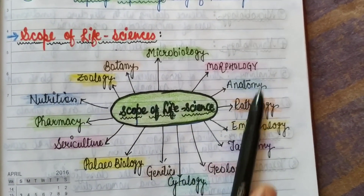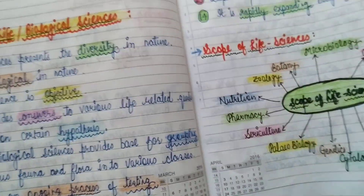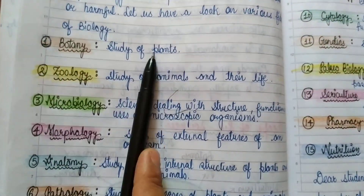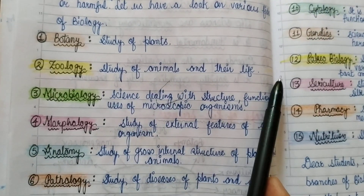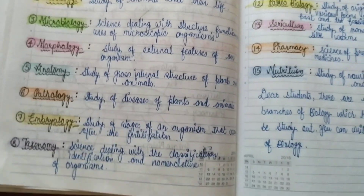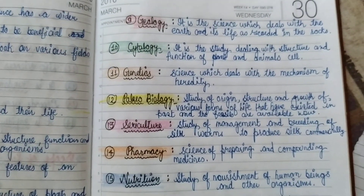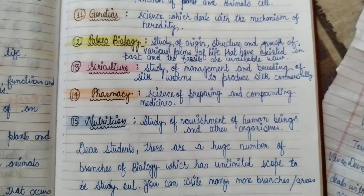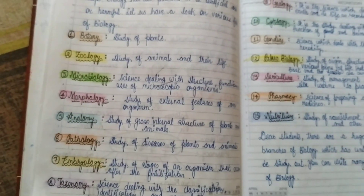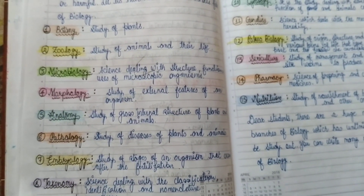Now let's move toward the scope of life sciences. The scope is very wide. Some key areas include botany, which is the study of plants, and zoology, the study of animals and their life. These are basic and common terms. You can refer to my notes for further details. That's all for today — thank you very much for listening carefully.